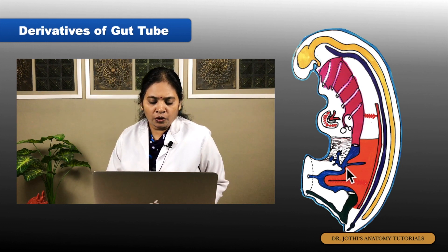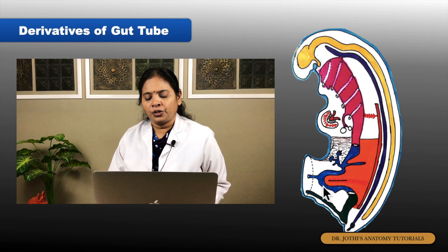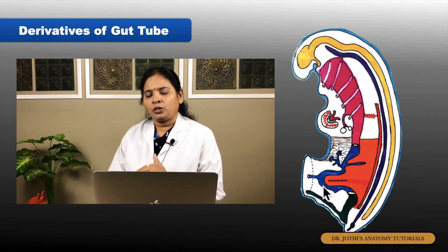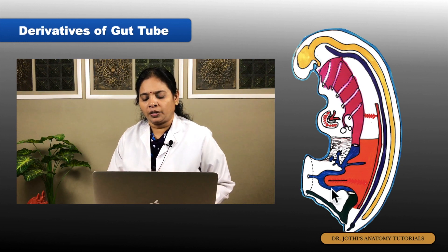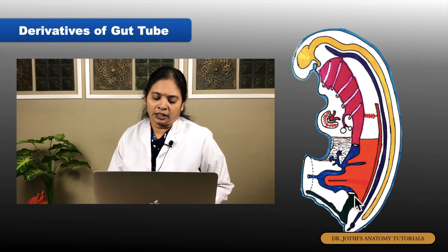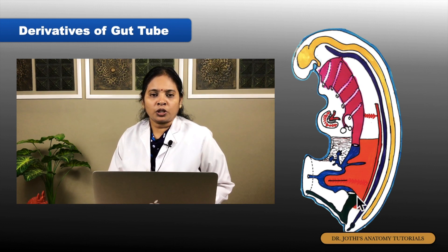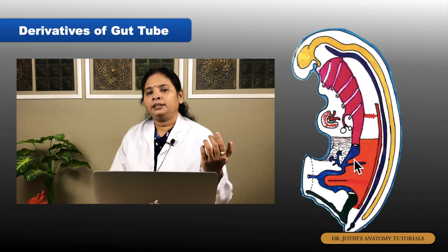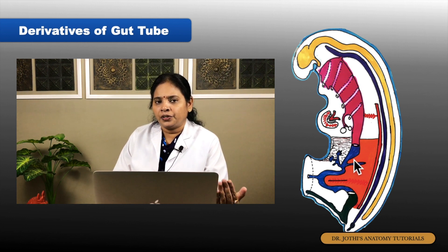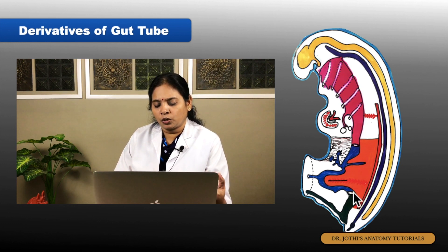From the region below the pancreaticoduodenal papilla, the remaining portion of the duodenum is formed from the midgut region. The midgut derivatives include: remaining duodenum, jejunum, ileum, cecum, appendix, ascending colon, and the right two-thirds of the transverse colon.